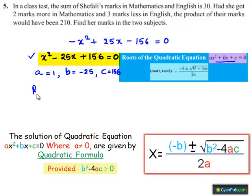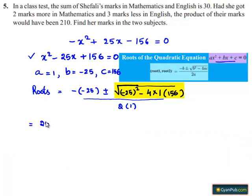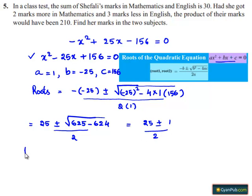So the roots are: minus b is minus of minus 25, which is 25, plus or minus square root of (25² minus 4 times 1 times 156), divided by 2 times 1. This equals 25 plus or minus square root of (625 minus 624), divided by 2, which is 25 plus or minus 1, divided by 2.